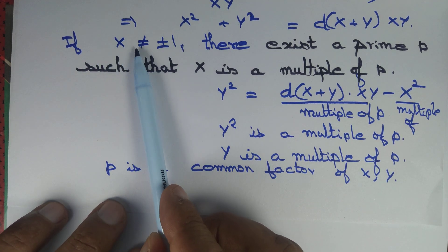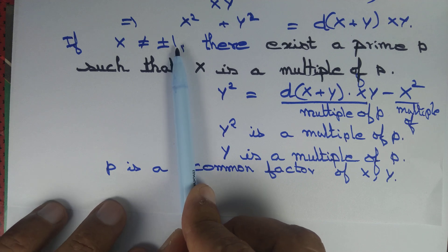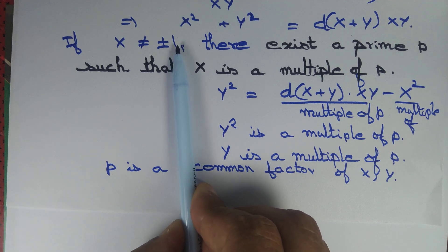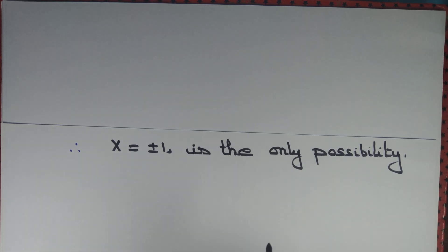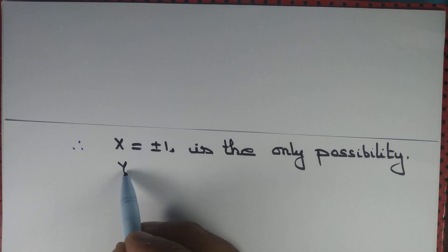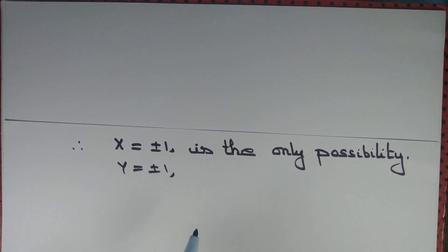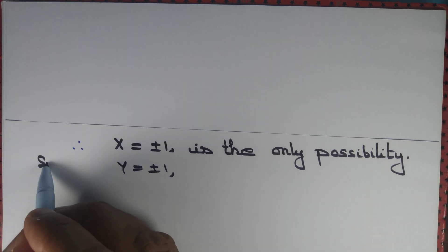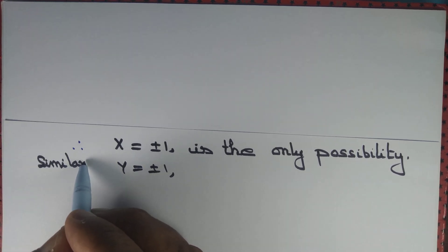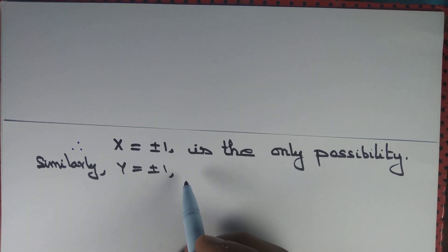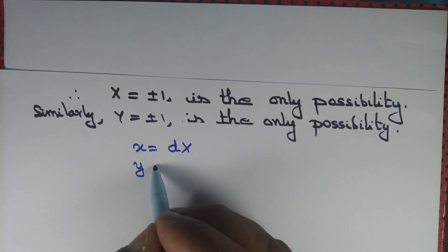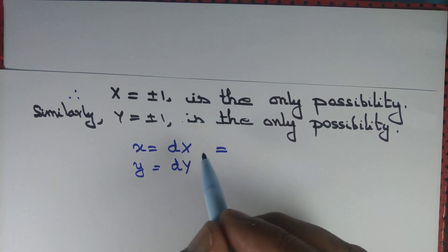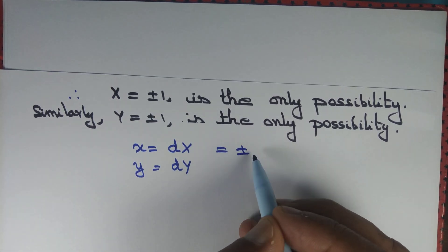We got a contradiction because we assumed X ≠ ±1. So the only choice is X = ±1. Since x and y are interchangeable, we can similarly say Y = ±1 is the only possibility as well.